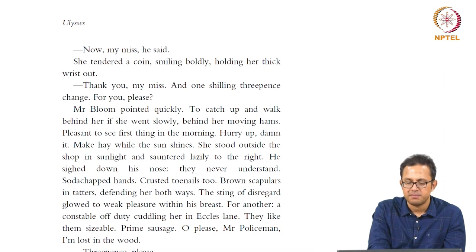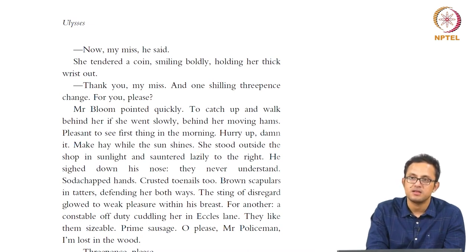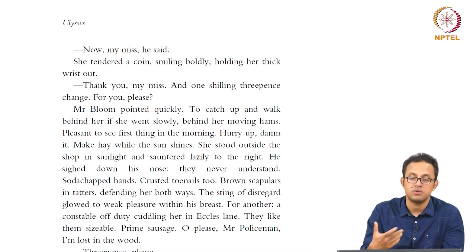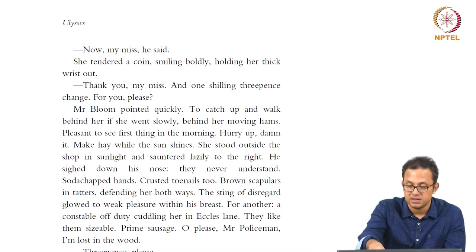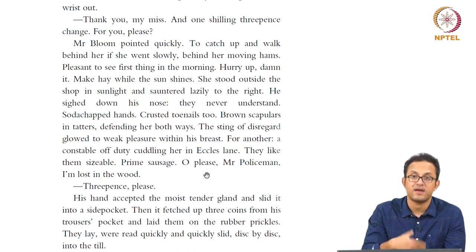She stood outside the shop in sunlight and sauntered lazily to the right. He sighed down his nose. 'They never understand. The sort of chapped hands, crusted toenails too.' The string of disregard glowed to weak pleasure within his breast. 'For another — a constable off duty, cuddling her in actless lane. They like them sizable, prime sausage. Oh please, Mr. Policeman, I am lost in the wood.' The police figure comes in as a fear factor — seen as a predator who hunts a woman like this. 'I am lost in the wood' — lost in one's own chain of thoughts, lost in the whole idea of directionlessness in Dublin. Then he cuts back into the present time; his reverie keeps being cut back. 'Three pence please.' He wakes up from his dirty reverie.